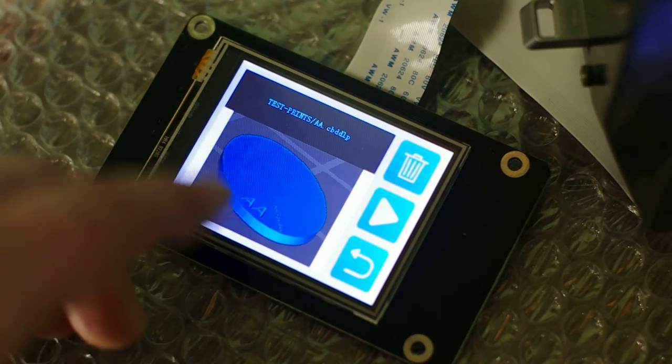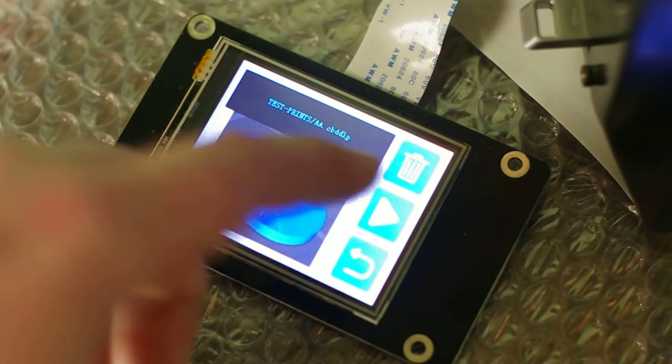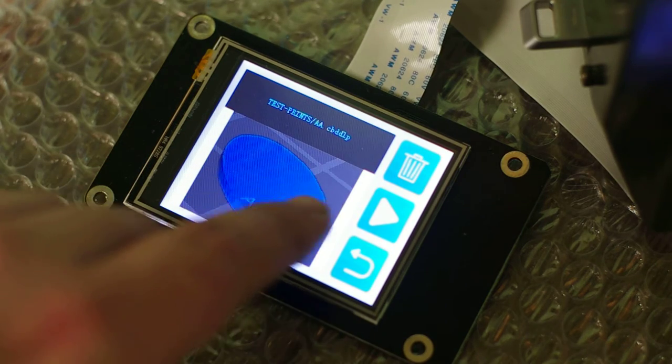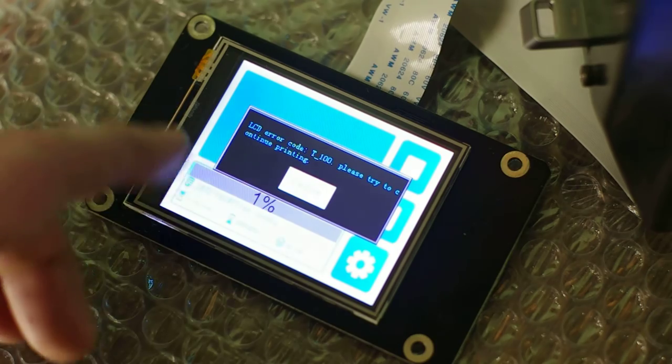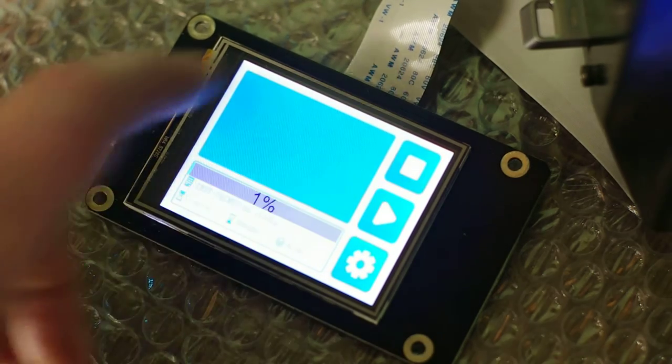So if we press here we can select it, and if we try to print it probably going to give a T100 error because I don't have the screen connected to the board, but there you go. But it works, it works.